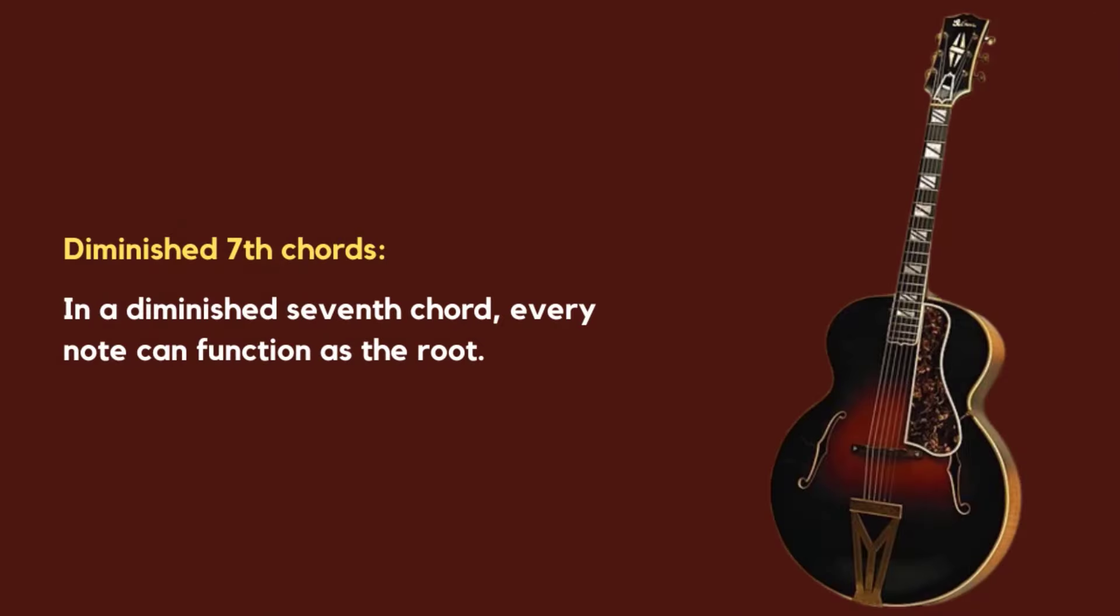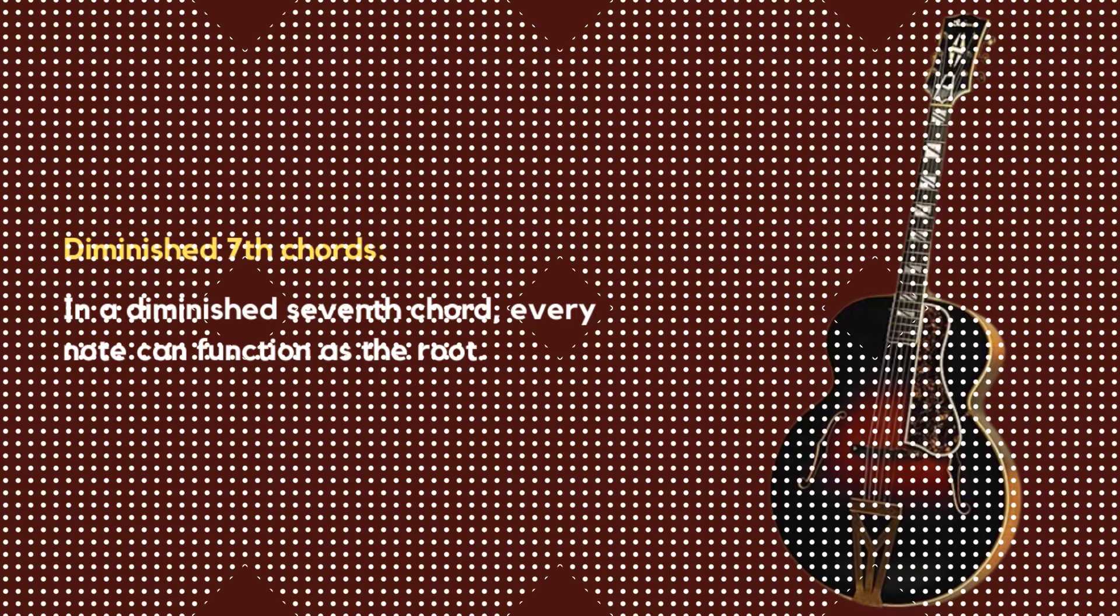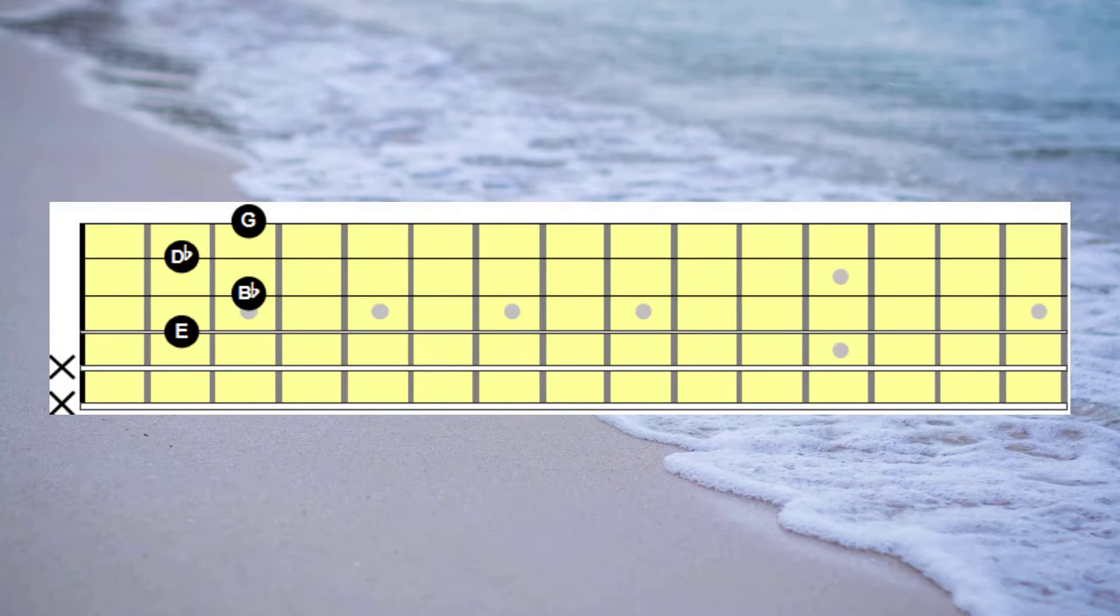As we know from previous sessions, any note in a diminished seventh chord can be considered the root note. Therefore a diminished seventh chord could potentially have six names. And I say six names when we take into account the enharmonic notes. So the shape on the screen at the moment could be named G diminished, D flat diminished or C sharp diminished, B flat diminished or A sharp diminished, or E diminished.